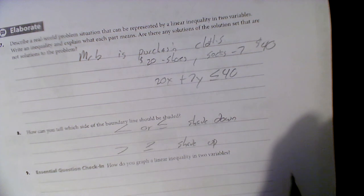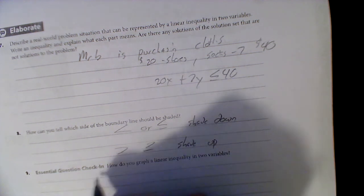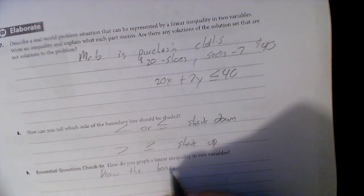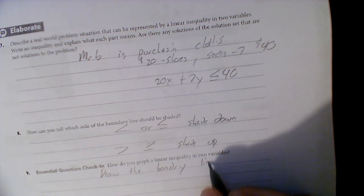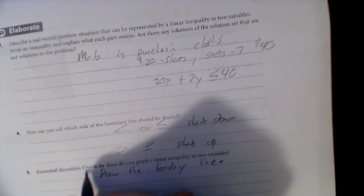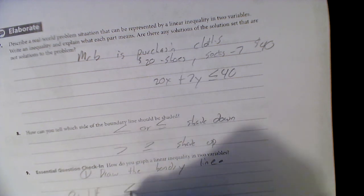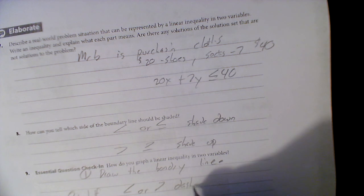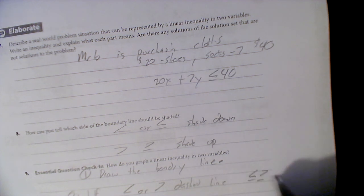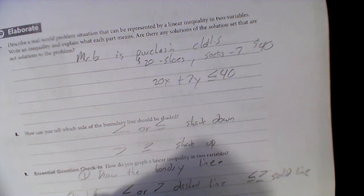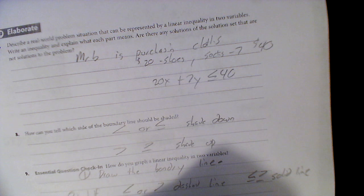How do you graph a linear inequality in two variables? Well, draw the boundary line. Step two: this one or this one - dashed line; this one, this one, or this one - solid line. So draw the type of line.